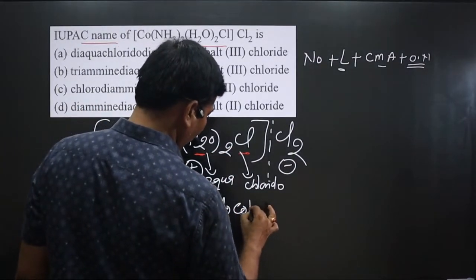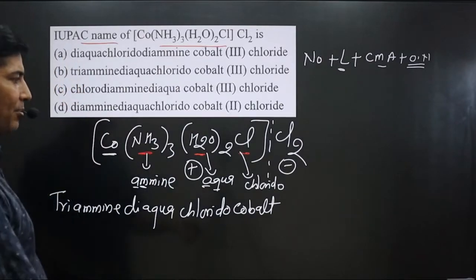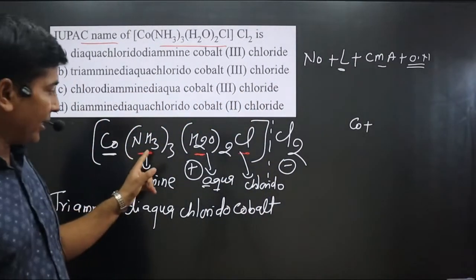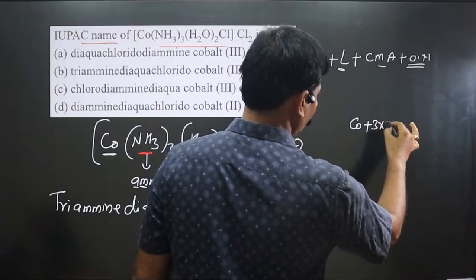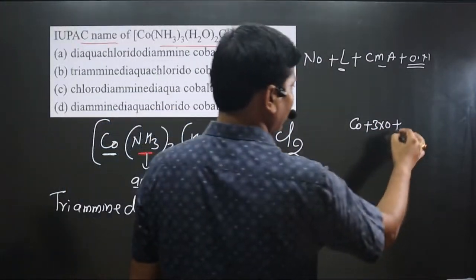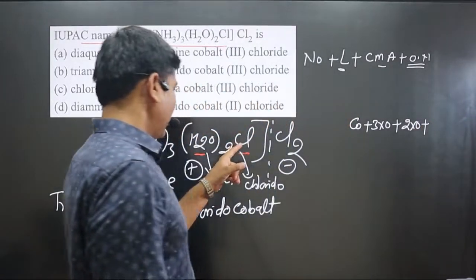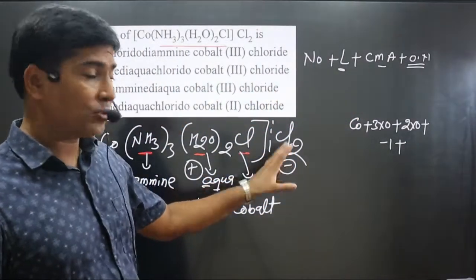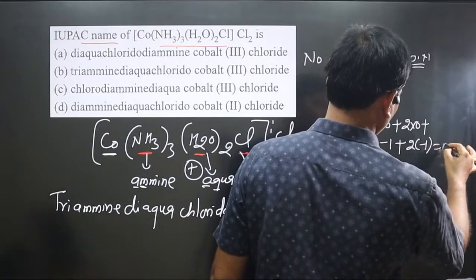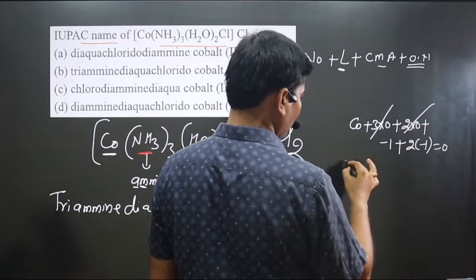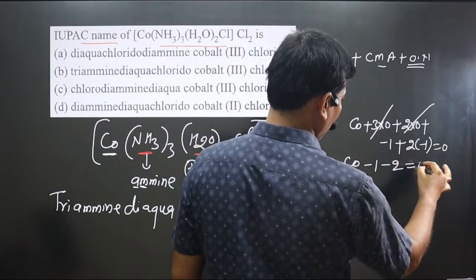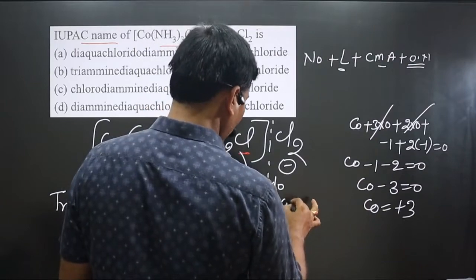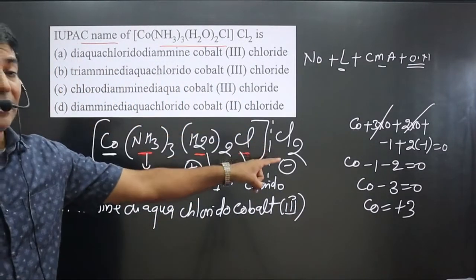The central metal atom is cobalt, and we use its common name. To calculate the oxidation number: cobalt + 3×(0) for NH₃ + 2×(0) for H₂O + (−1) for Cl inside + 2×(−1) for the counter Cl₂ = 0. Simplifying: cobalt − 1 − 2 = 0, so cobalt − 3 = 0, meaning cobalt is in the +3 oxidation state, written as Roman numeral III.